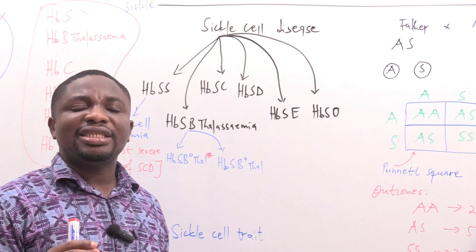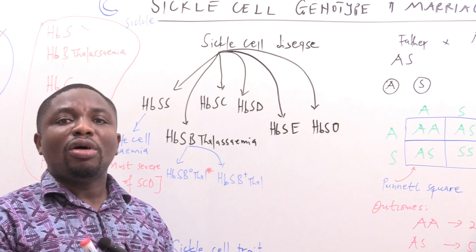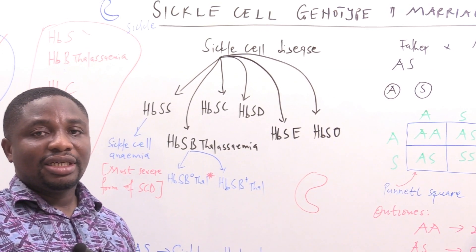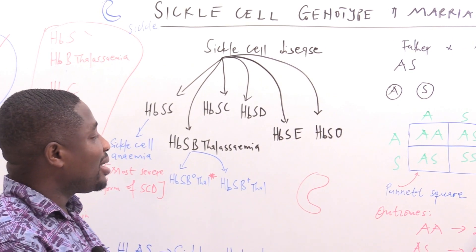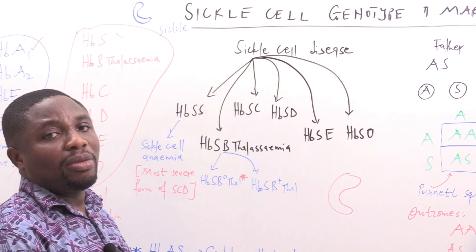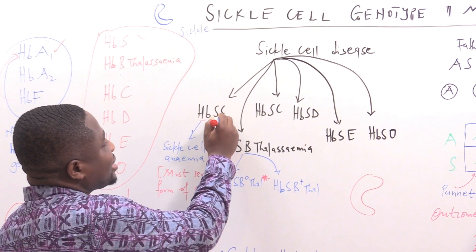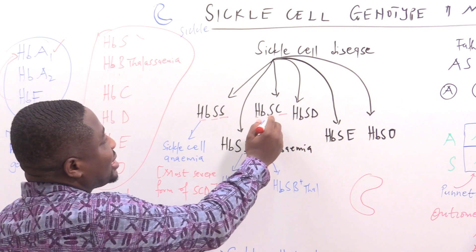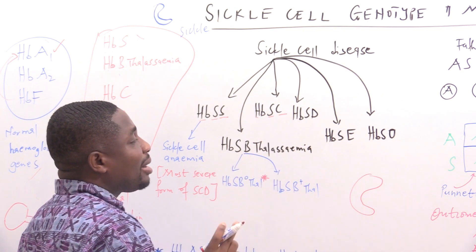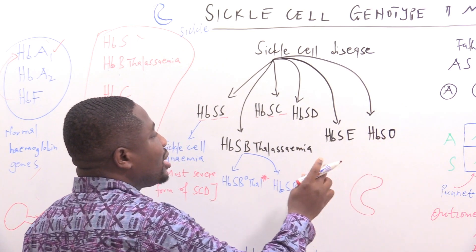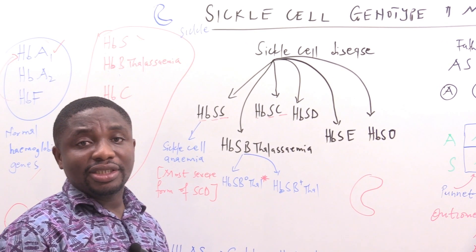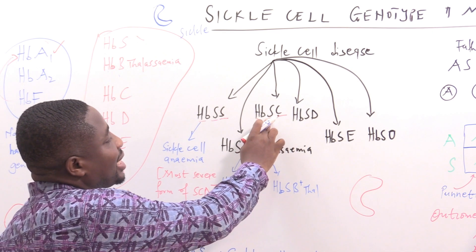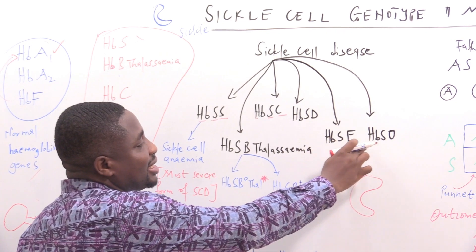Sickle cell disease simply means you have two genes that bring about an abnormal hemoglobin with a sickle shape — two abnormal genes that produce sickle hemoglobin. The abnormal gene combinations are: HbSS, HbSC, HbS beta-thalassemia, HbSD, HbSE, and HbSO. They are all abnormal hemoglobin gene pairings. For sickle cell disease to occur, you need two abnormal hemoglobin genes, of which at least one must be S.